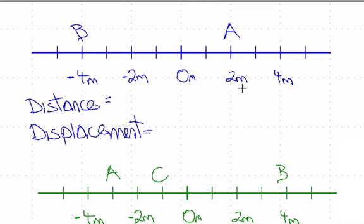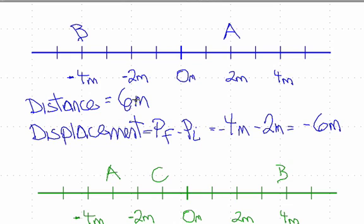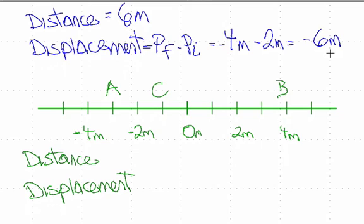Here's one that looks a little different. We go from A to B: one, two, three, four, five, six meters — so the distance is six meters. For displacement, position final minus position initial: our final position is minus four meters, minus our initial position of two meters, giving minus six meters. We went six meters in the negative direction. Distance is a scalar, just the magnitude; displacement is a vector with distance and direction.